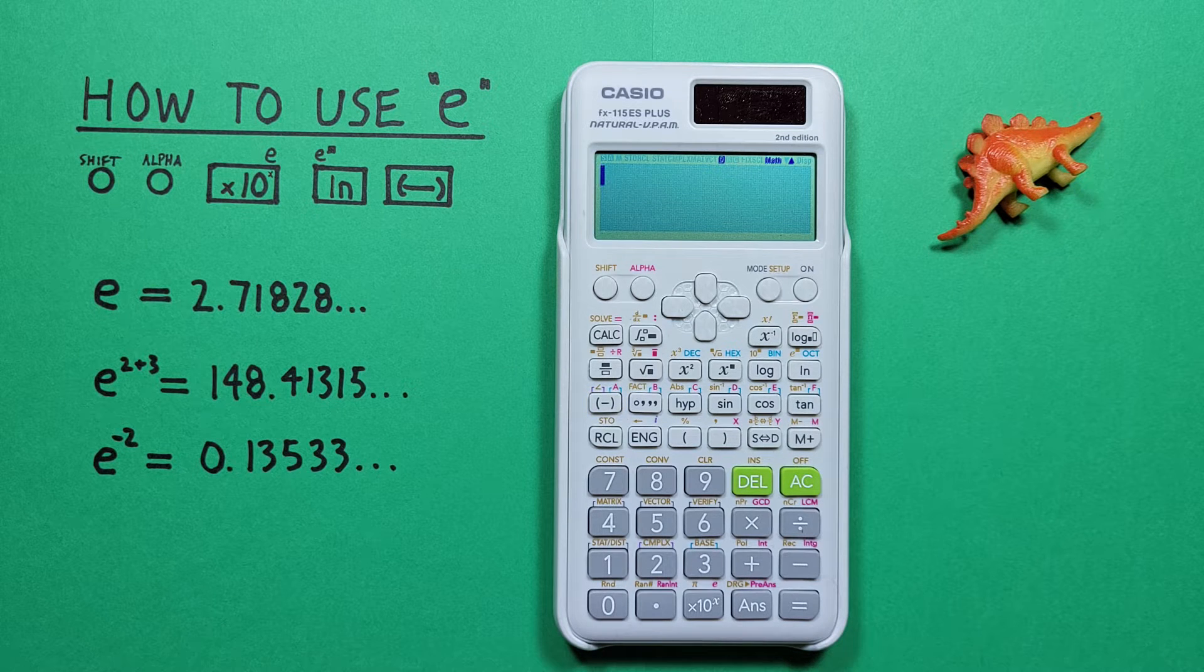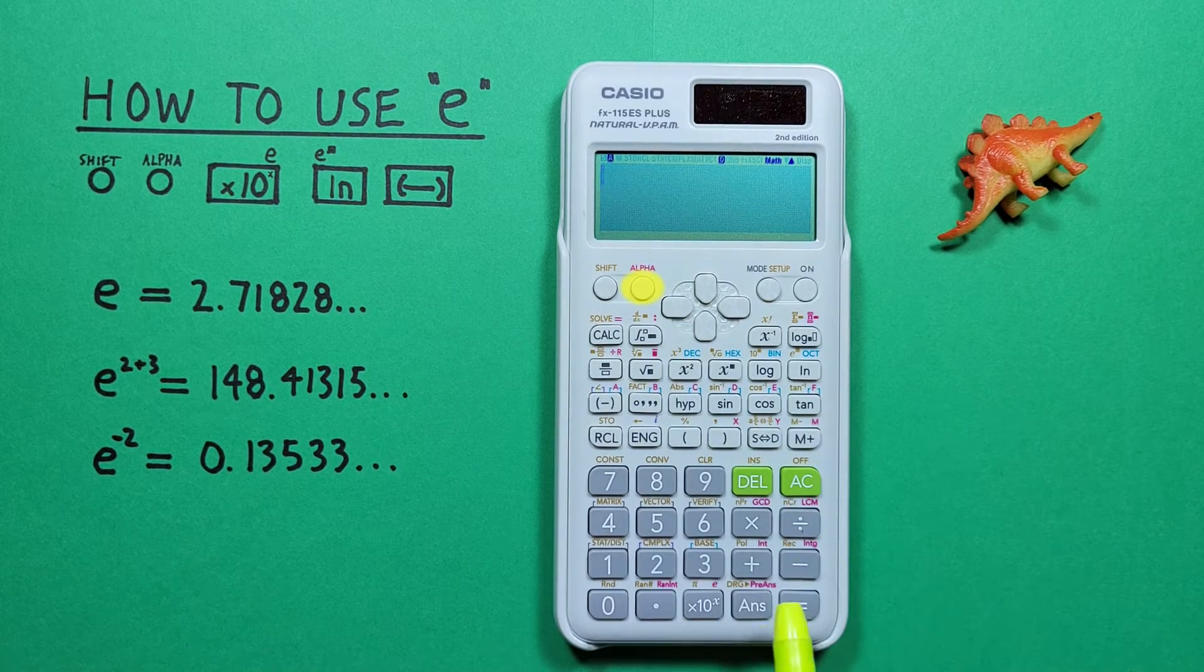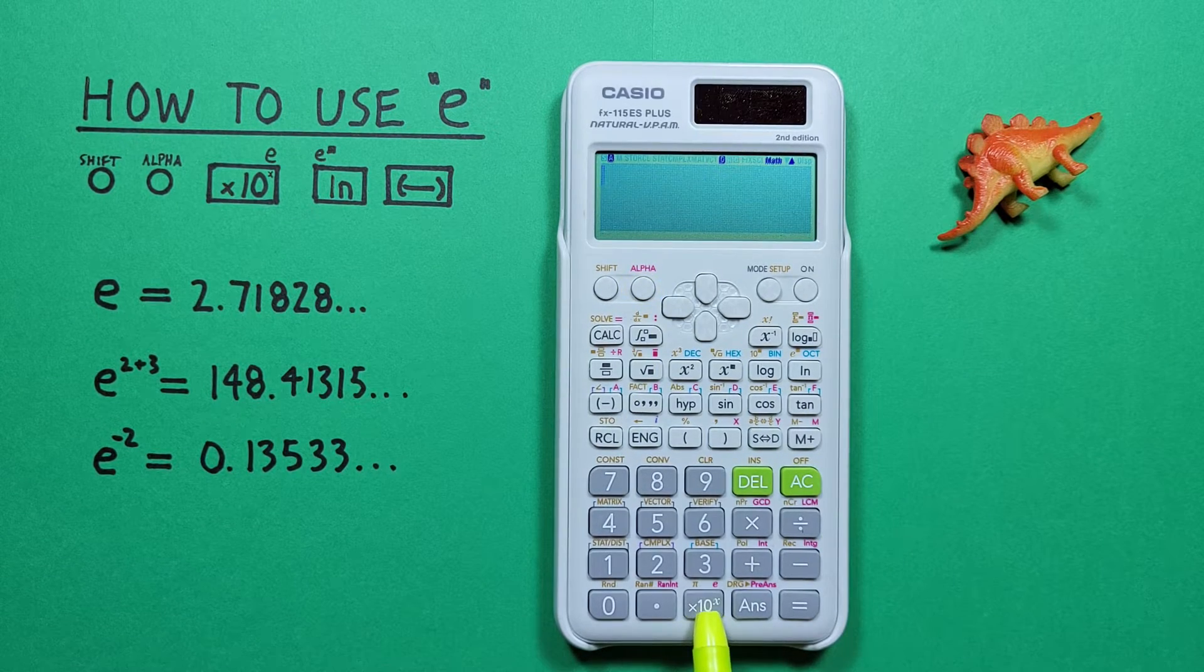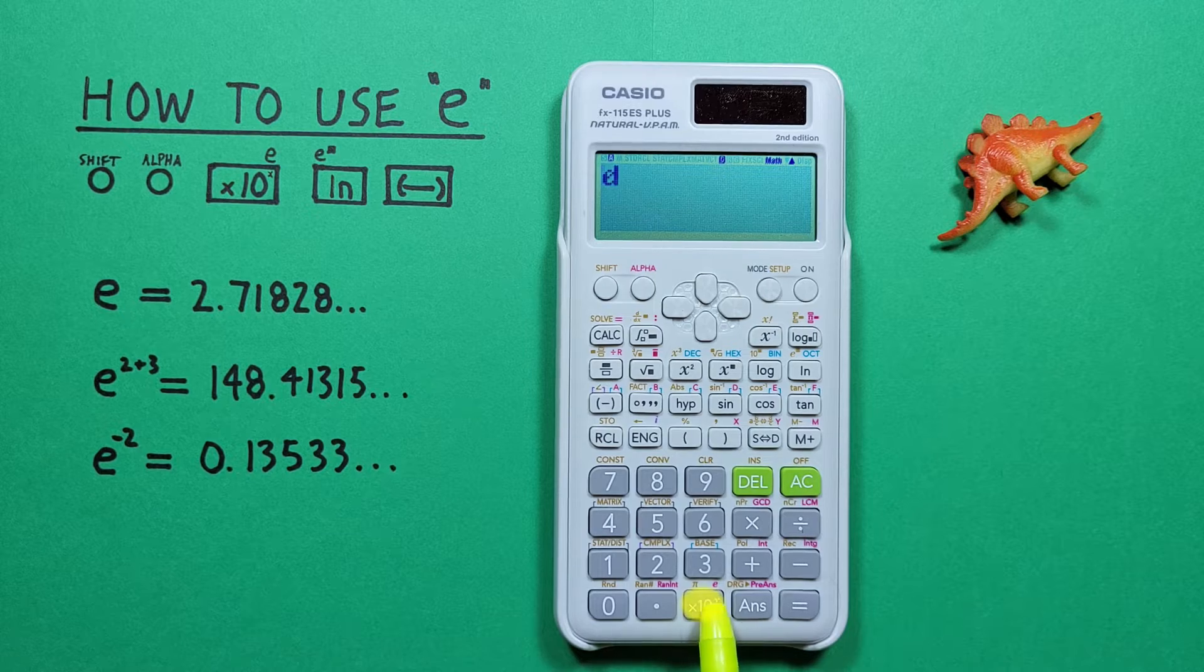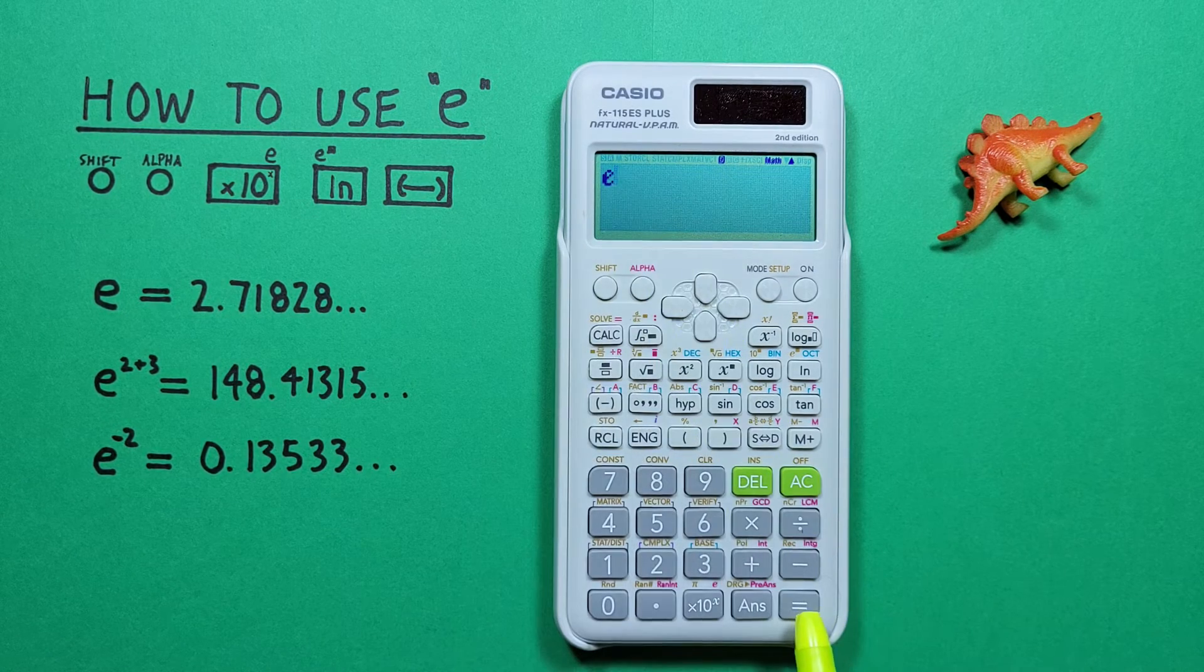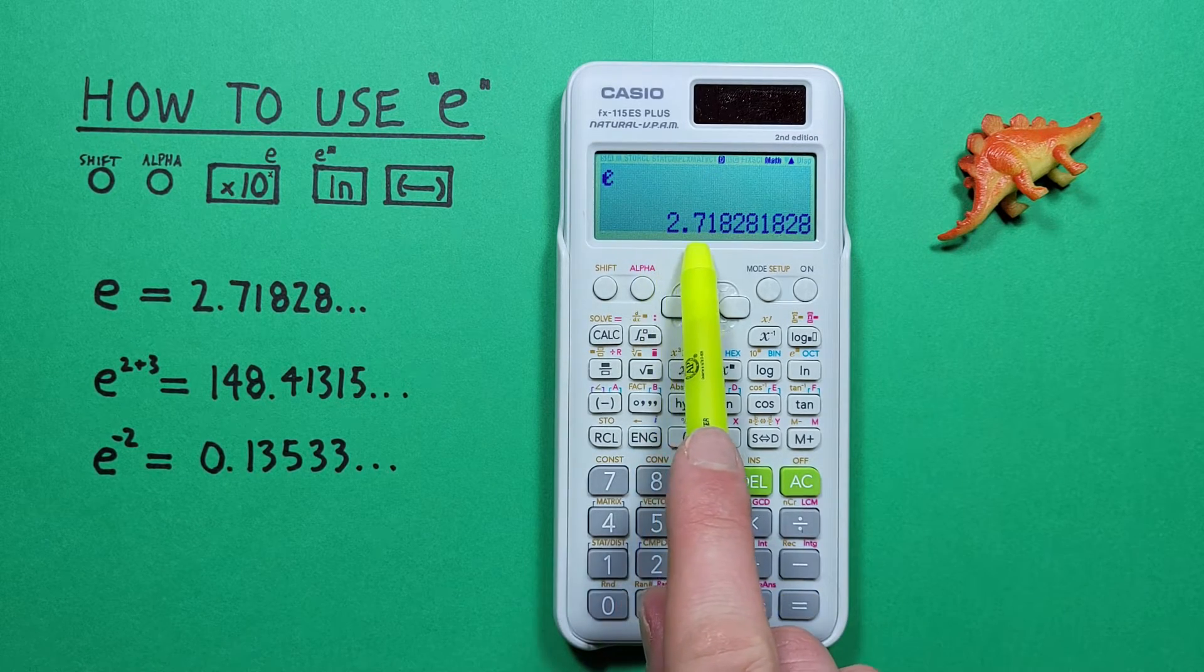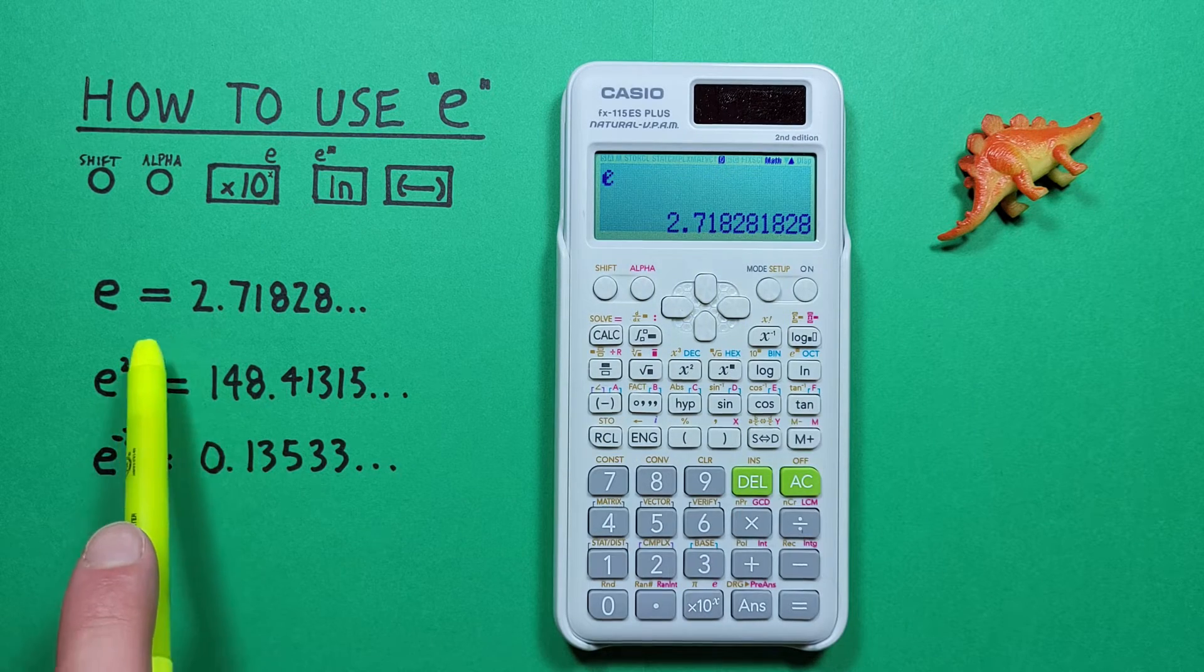If we just want to get e on its own in this calculator, what we have to do is press alpha and then the times 10 to the x key with the alpha function of e. We see e on our screen, and if we press equals, we see that is equal to 2.71828, etc., which is correct.